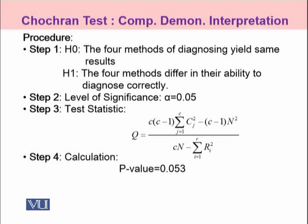After observing this P-Value, we need to outline all procedure steps for testing the hypothesis for the Cochrane Q-Test. Under H0, we take the statement that the four methods of diagnosing provide us with the same result, whereas the alternative is that certain differences exist between the four treatment methods. The next step is to decide upon alpha, which was 5% in our case.